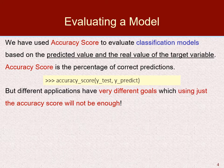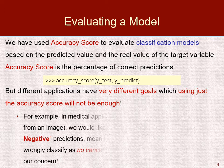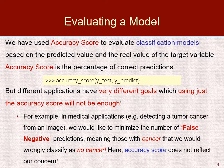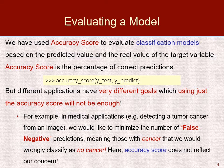However, different applications have very different goals, which means using just the accuracy score will not be enough. For example, in medical applications such as detecting tumor cancer from an image, we would like to minimize the number of false negative predictions — those with cancer that we wrongly classify as no cancer. They would not know to take care of themselves, although they have cancer, and that is very dangerous. So accuracy score does not reflect our concern for the patients, and we should look for other methods of evaluating a model based on our goal.